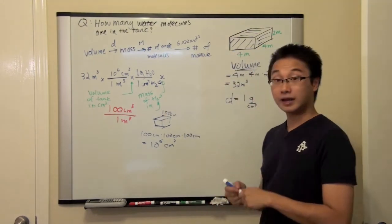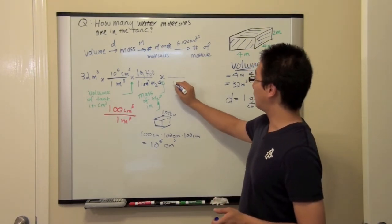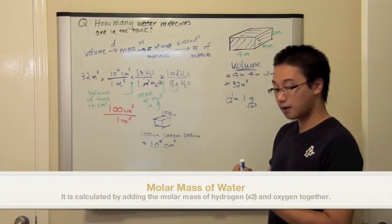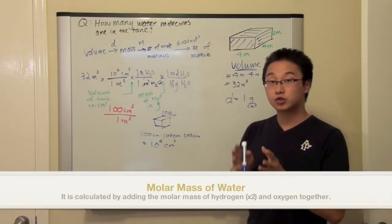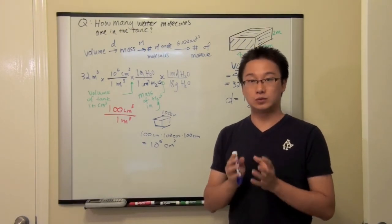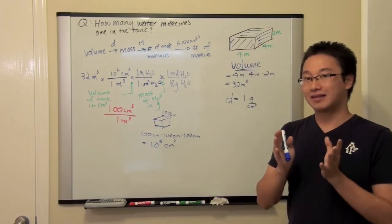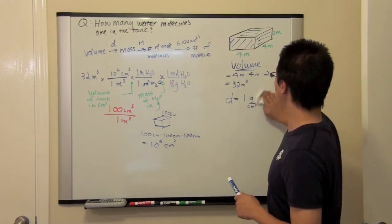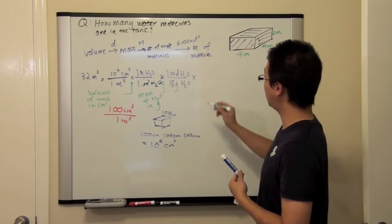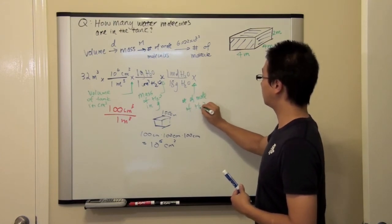Next, we are going to find out the number of moles of water molecules, and we are going to use the molar mass. We are going to do 1 mole of water over 18 grams of water. Again, make sure you are able to make a statement to validate your conversion factor: 1 mole of water is equal to 18 grams of water. Don't make a careless mistake at this point. So we can multiply, and at this point we have the number of moles of water molecules.